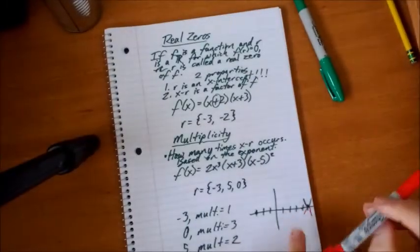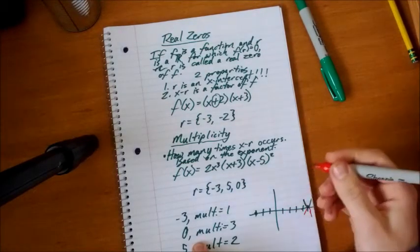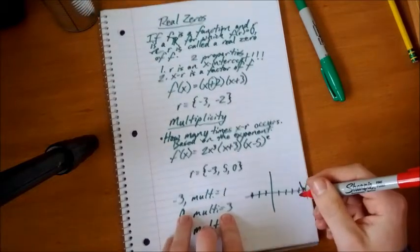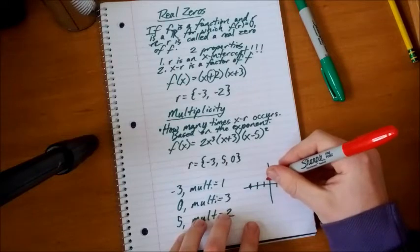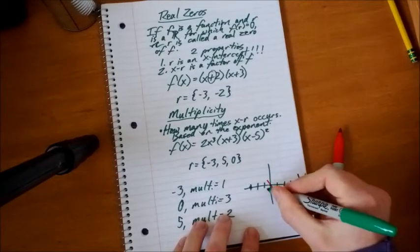So going back here, let's go to zero with multiplicity of three, because I want to see how it crosses over. So we have different possibilities. Zero, multiplicity three, it crosses over. So at zero it could either go like this, whoop, or it could go like this.